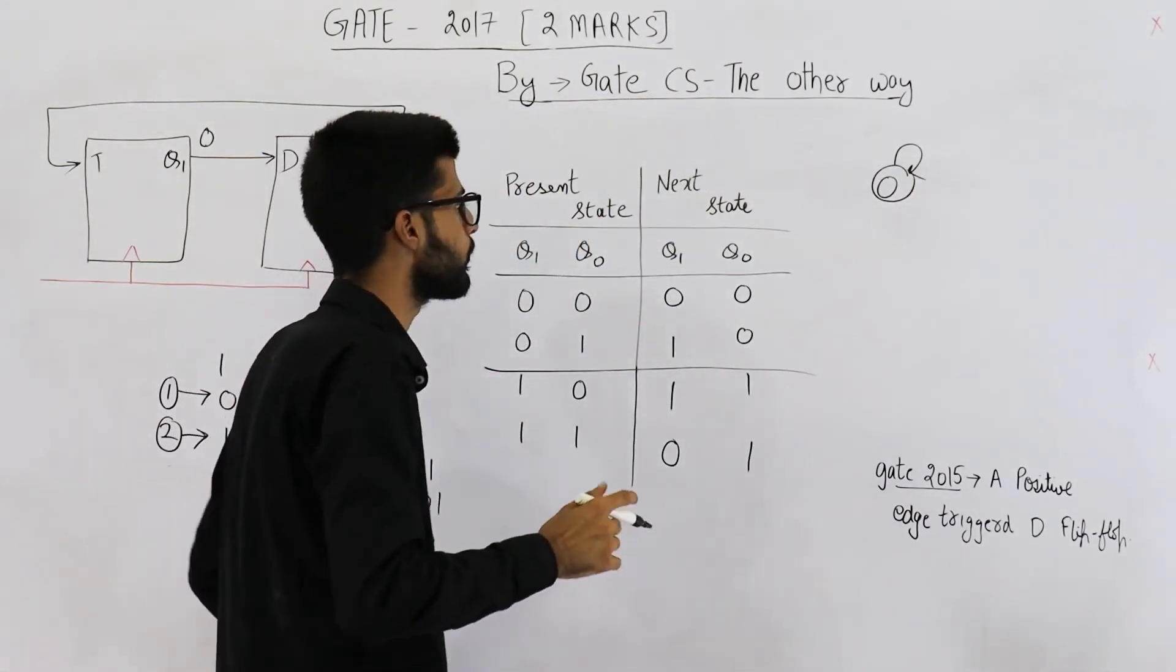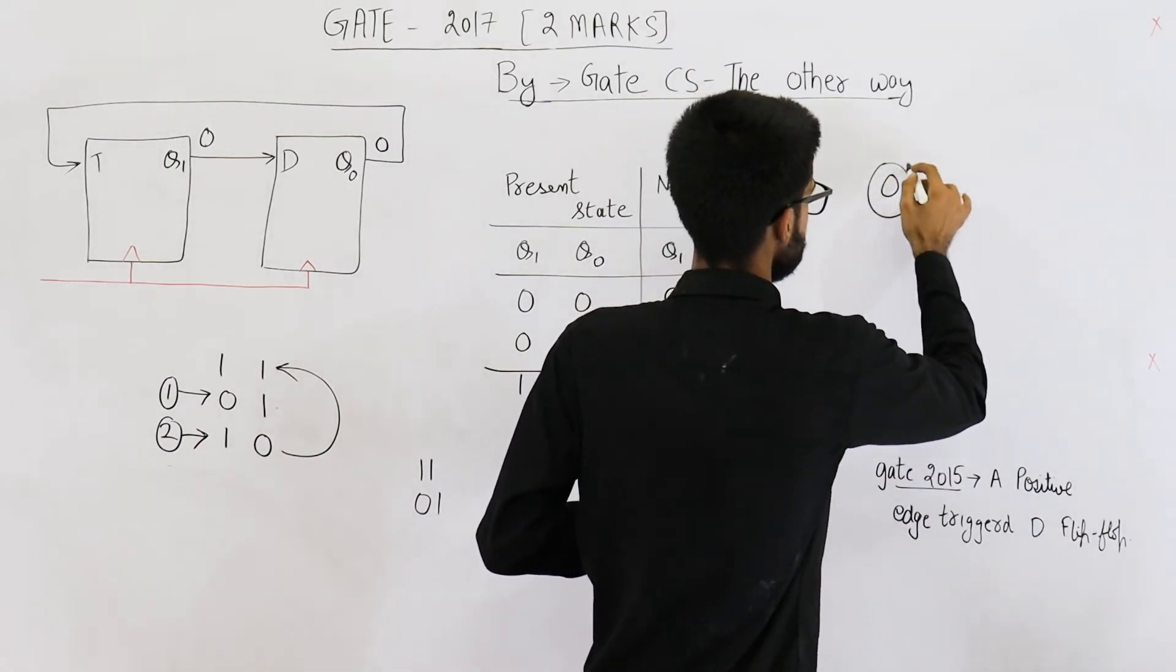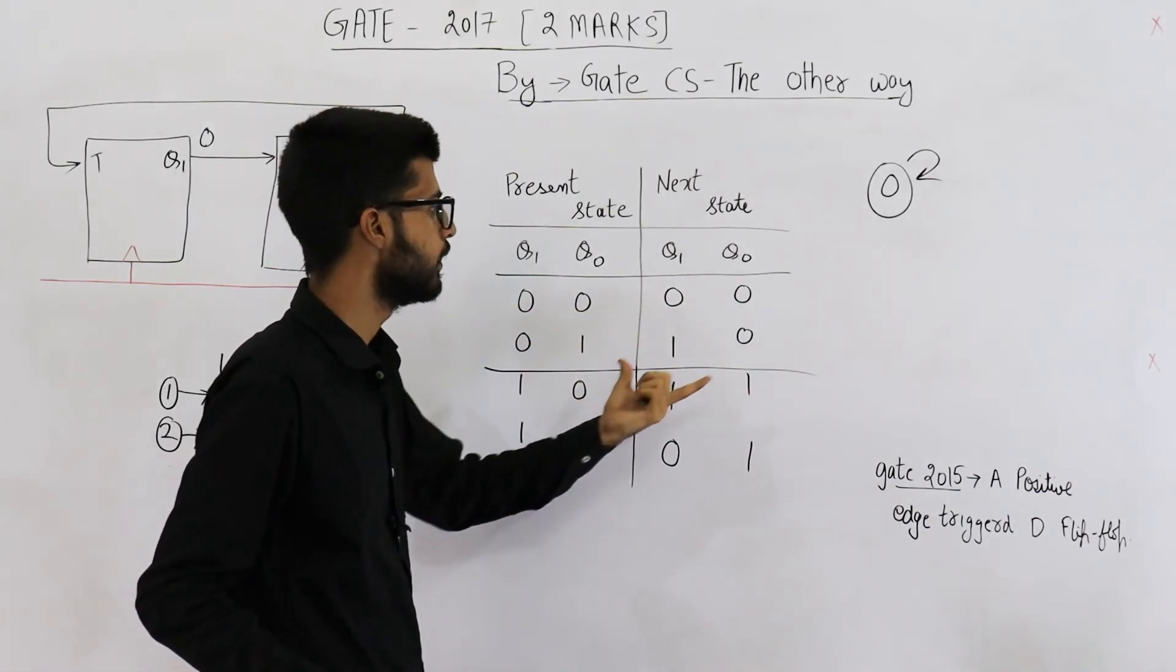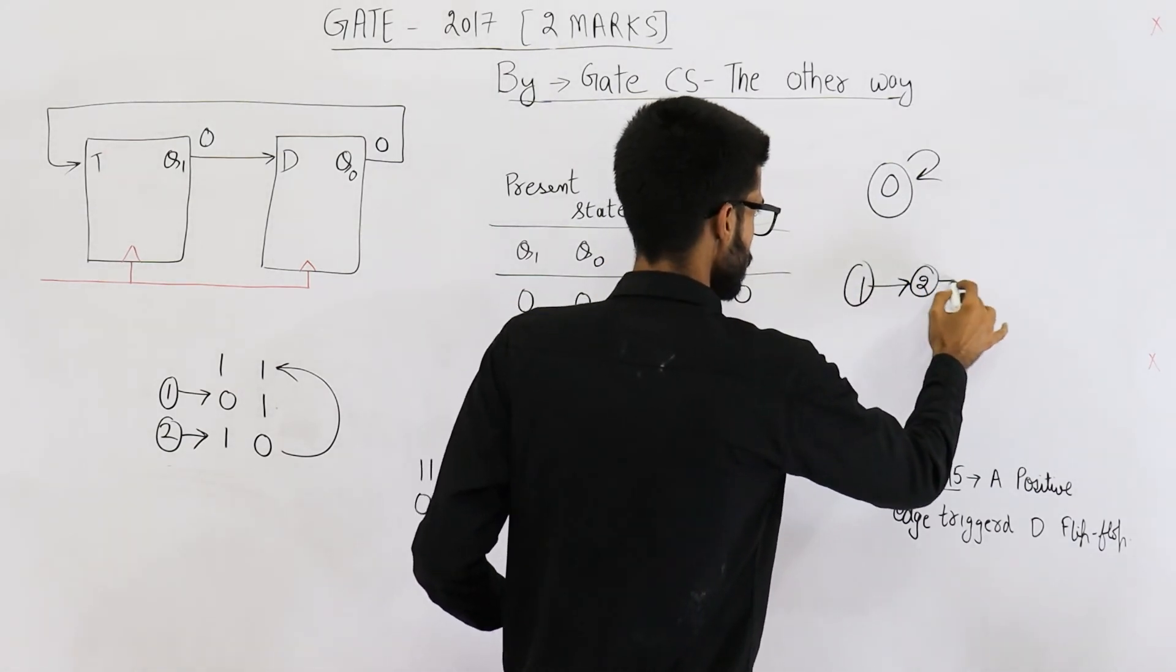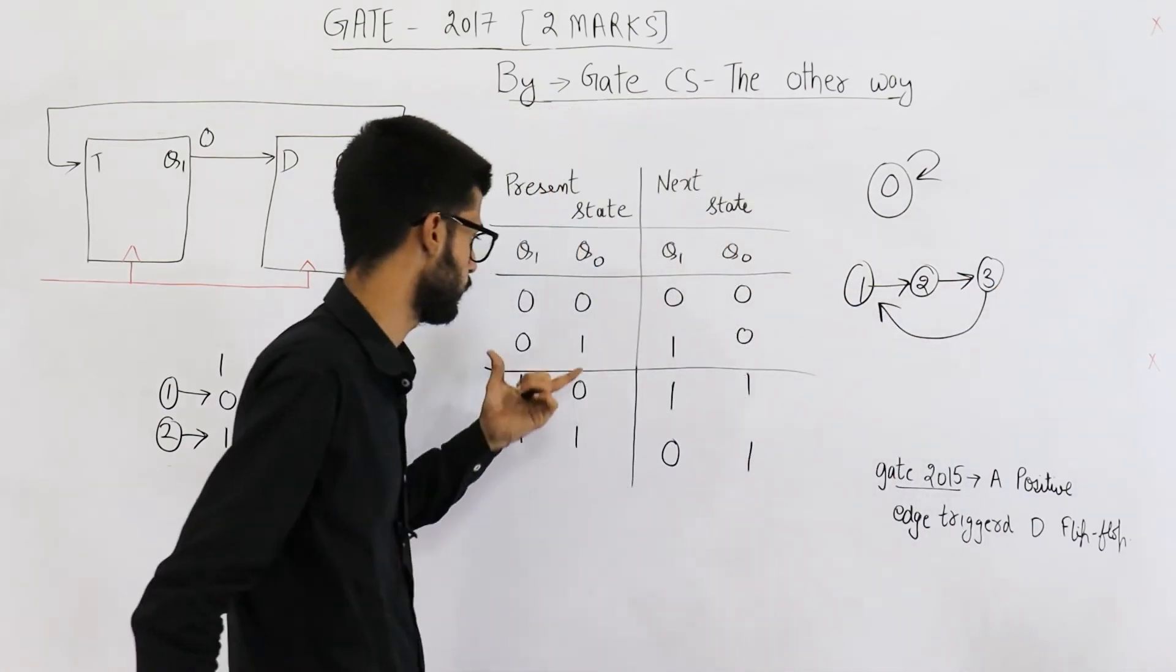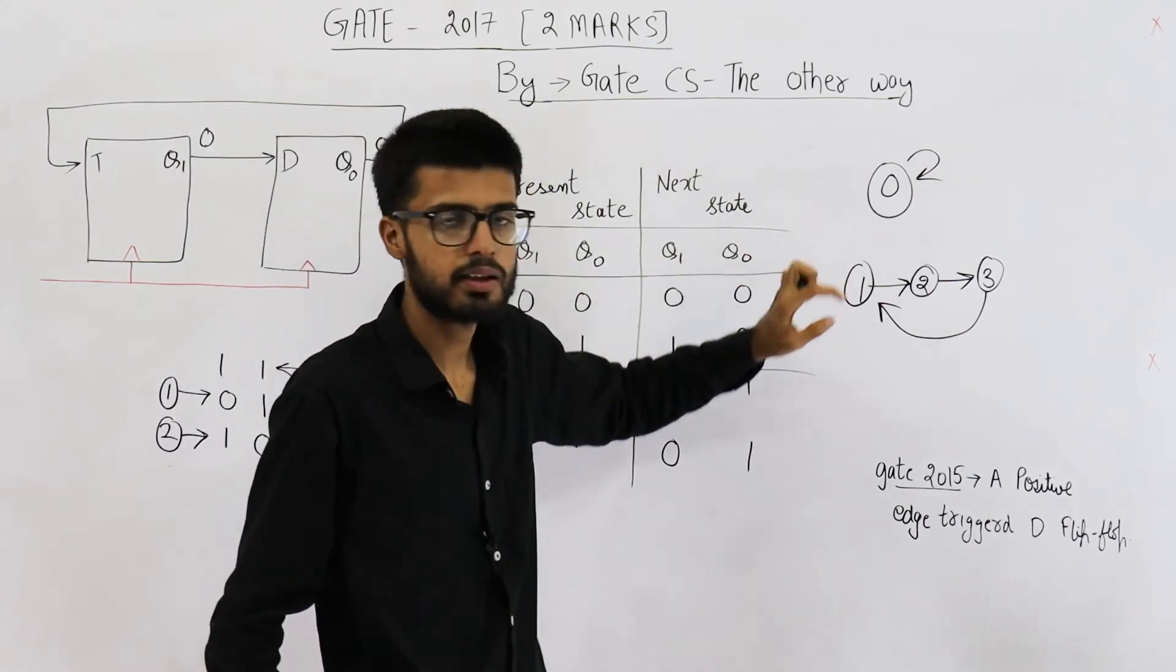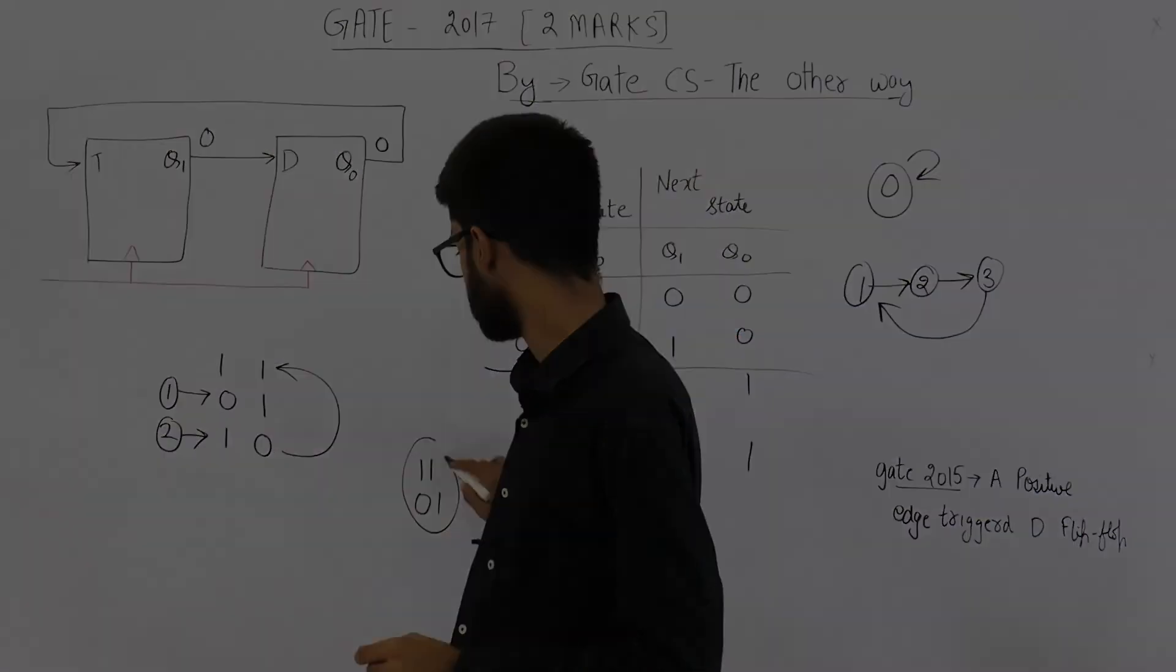State 0 has a self loop. If you are currently on state 0, you will remain here only. If you are on state 1, you will go to 2. 1 goes to 2, 2 goes to 3, and 3 goes back to 1. 1 goes to 2, 2 goes to 3, and 3 goes back to 1. So this is the sequence diagram, state sequence diagram or counting sequence diagram. And this is your answer.